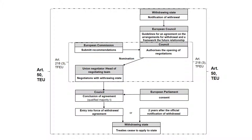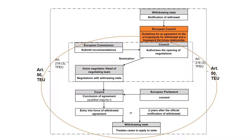Let's have a closer look at the European Council's role in Article 50. The institution is in a key position at the first stages of the process. By setting guidelines for the arrangements of withdrawal and the future relationship, it defines what needs to be done — no further steps whatsoever can formally be taken without the guidelines of the European Council.